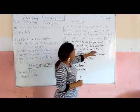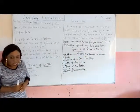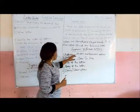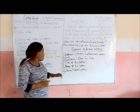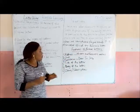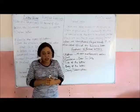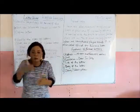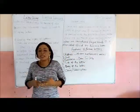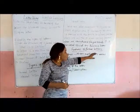Now we move forward to the features of formal letters. Every letter has its own features, its own format, and its own way of writing. We have six features of the formal letter. The first is the address. Every letter has an address, but for the formal letter we have two addresses: the writer's address and the receiver's address.